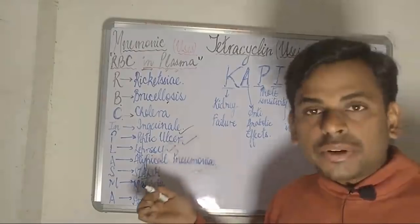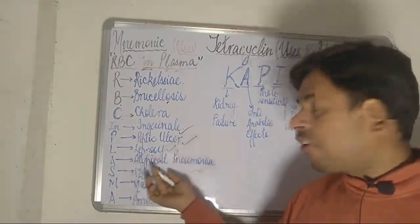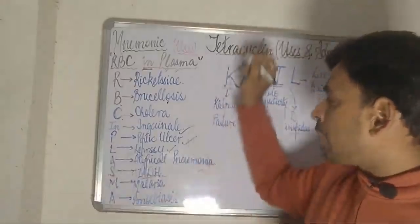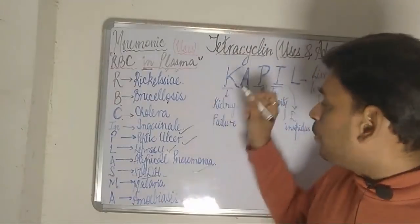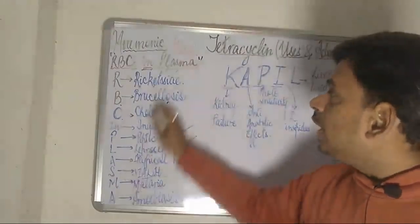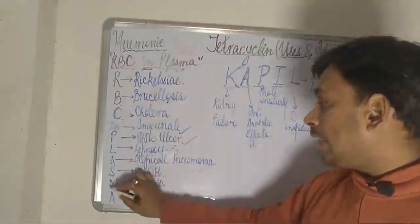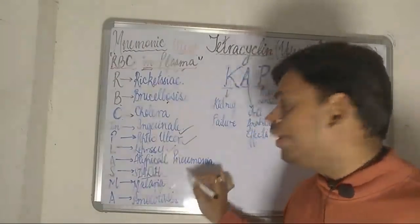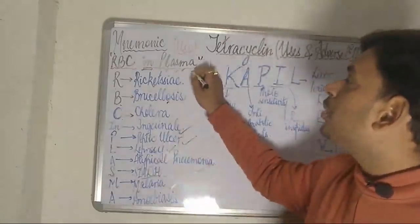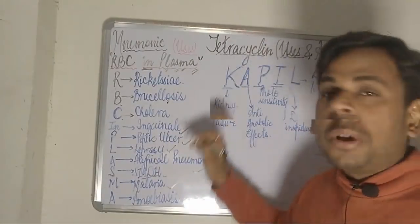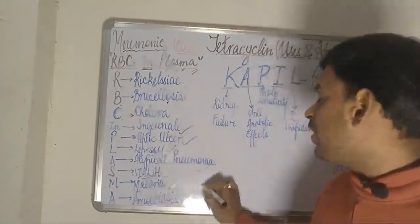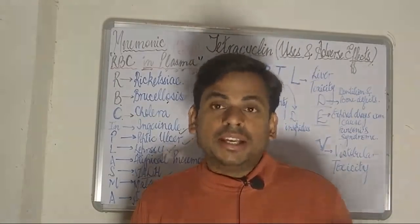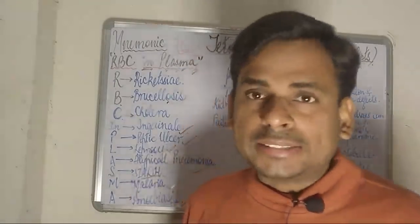So in the syndrome of inappropriate antidiuretic hormone, tetracyclines find their usage. Moving on to the M of plasma — tetracyclines find their usage in the treatment of malaria. And moving on to the last A of plasma, it is referring to infections caused by amoebiasis.